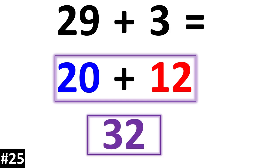So as you can see, we can easily add any two-digit number by a one-digit number by splitting the two-digit number into tens and ones and then adding the ones together. And whatever the result is, adding that to the tens.